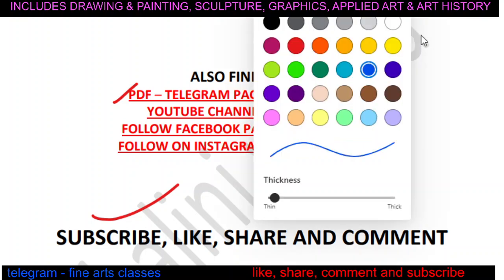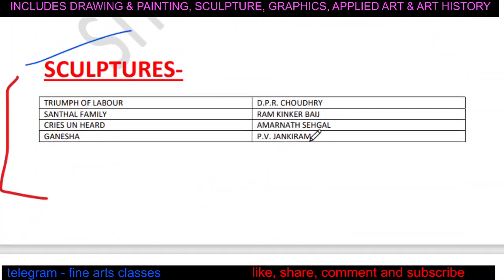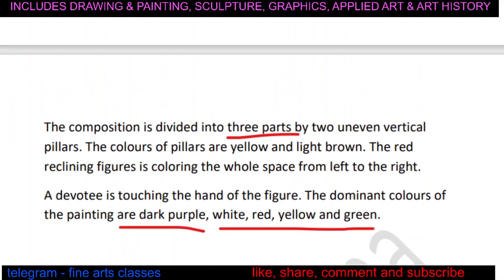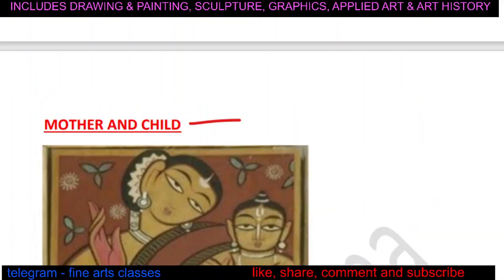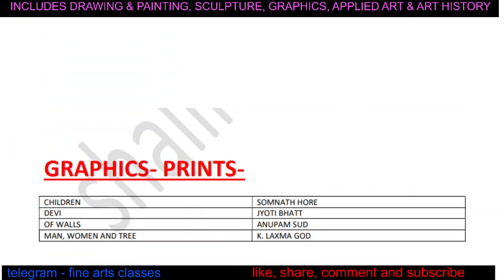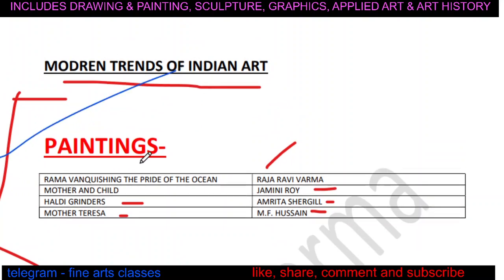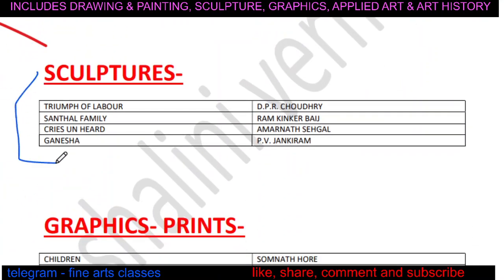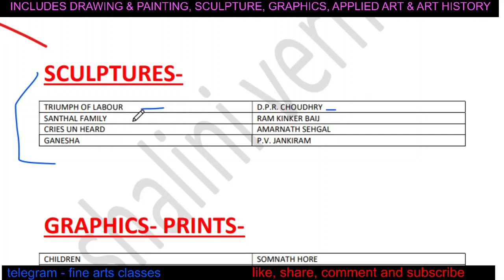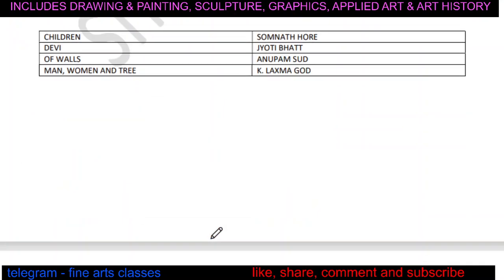Hello everyone, welcome back to our channel. In this video we will discuss sculptures of modern trends. In the last video we covered paintings — the Rama Vanquishing the Bride of the Ocean, Mother and Child, Haldi Grinders, and Mother Teresa. In this lecture we'll discuss Triumph of Labour by DP Ray Chowdhury, Santhal Family by Ram Kinkar Baij, Cries Unheard by Amarnath Sehgal, and Ganesha by PV Janki Ram.